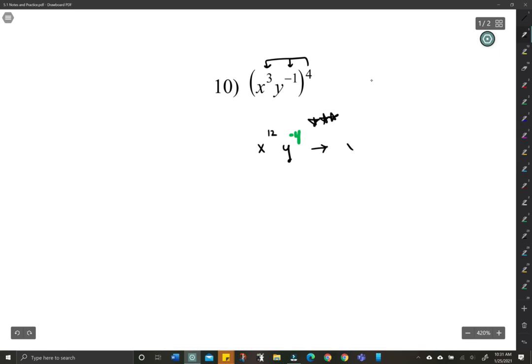So the x is going to stay up top. x to the 12th stays up there. The y to the negative 4 is going to move to the denominator and become positive. So that's it there.